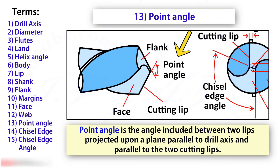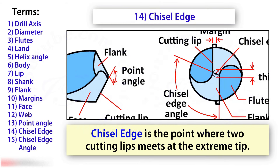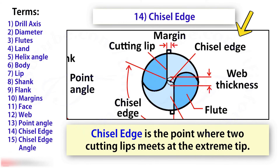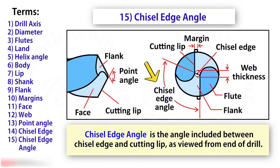Point angle is the angle included between the two lips projected upon a plane parallel to the drill axis and parallel to the two cutting lips. Chisel edge is the point where the two cutting lips meet at the extreme tip. Chisel edge angle is the angle included between the chisel edge and the cutting lip as viewed from the end of the drill.